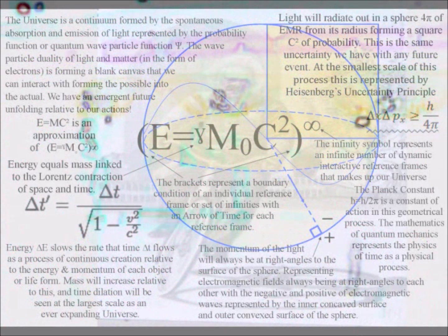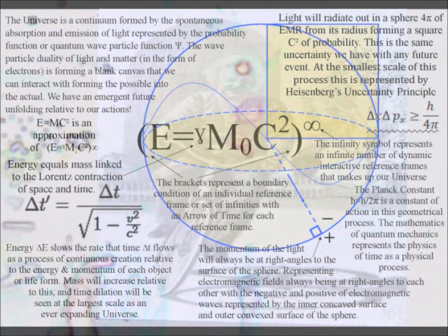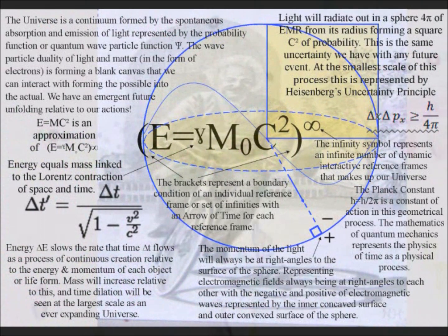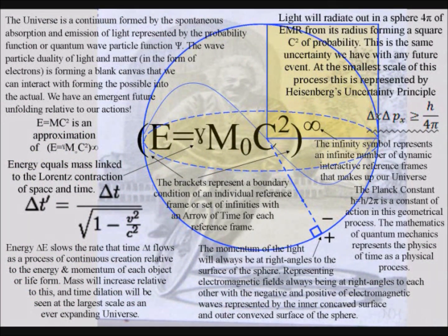I will start with Einstein's famous equation: energy equals mass times the speed of light squared. The energy equals mass is linked to the Lorentz contraction of space and time. The Lorentz contraction represents the time dilation of Einstein's theory of relativity, with energy slowing up the rate that time flows as a universal process of energy exchange or continuous creation.